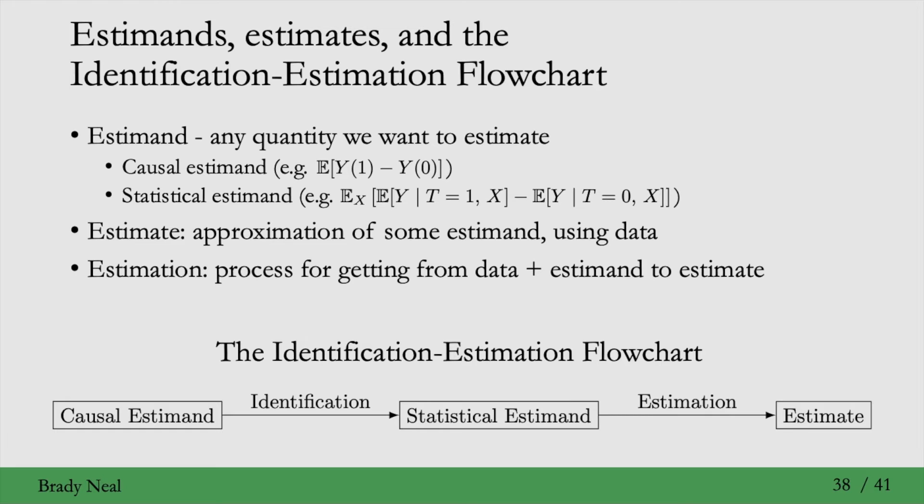A useful picture to keep in mind is the Identification Estimation flowchart. So, this flowchart, reading from left to right, we start with a Causal Estimand, and then we get a Statistical Estimand using the process of identification. That's what we saw when we proved that we can transform the ATE from a Causal Estimand into a Statistical Estimand using those four important assumptions.